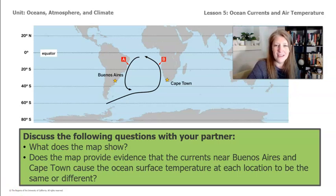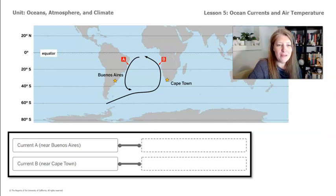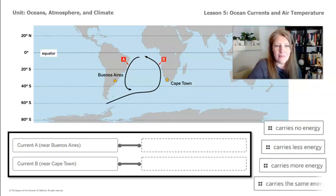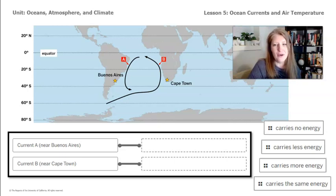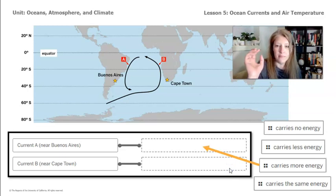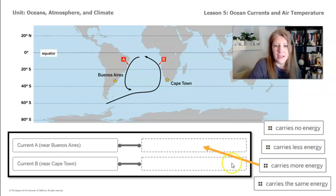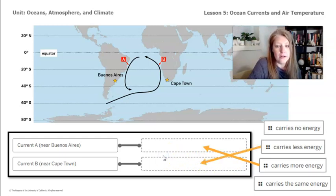Let's take a look at this graphic showing current A near Buenos Aires and current B near Cape Town. How would we describe current A? It carries more energy, because the ocean current passing Buenos Aires comes from the equator. The closer a location is to the equator, the more energy it receives from the sun, so that current carries warmer water. The ocean current passing Cape Town comes from the polar region, so it carries less energy and moves cooler water from the pole to that area.